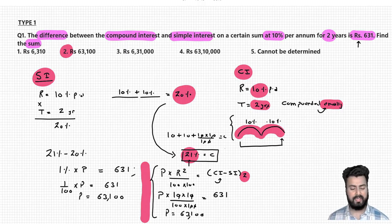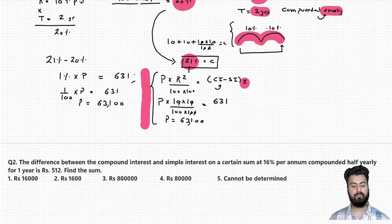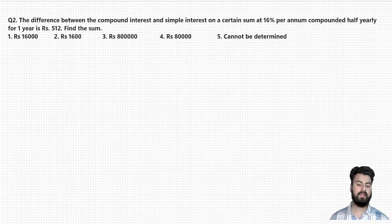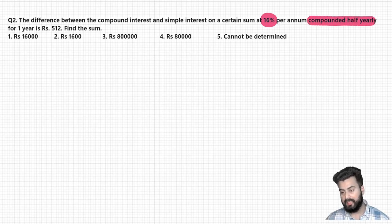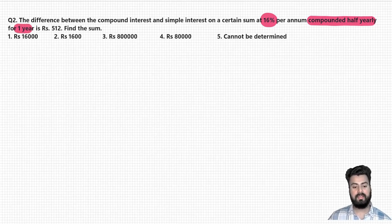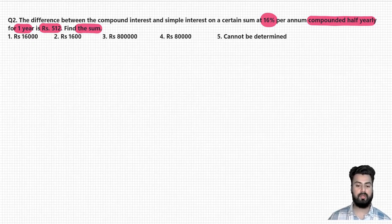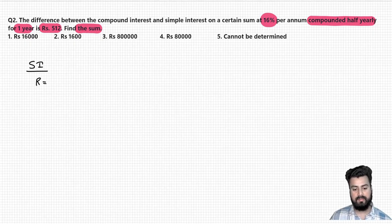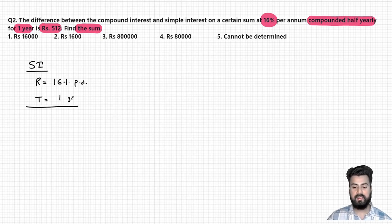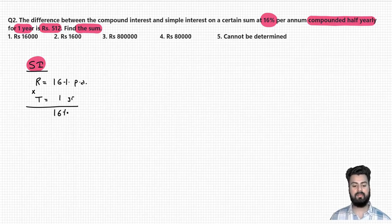After understanding this question, let us discuss one more question based on the same type. The difference between simple and compound interest on a certain sum is at 16% per annum, compounded half yearly for one year, and the difference is rupees 512. Again, we have to find the value of the principal. Let us first try solving this using the concept of effective rate of interest. First, calculate the effective rate of interest in case of SI: rate is 16% per annum, time period is one year.